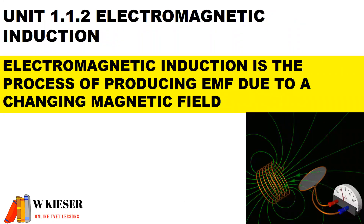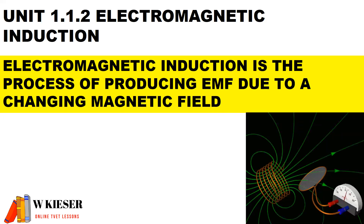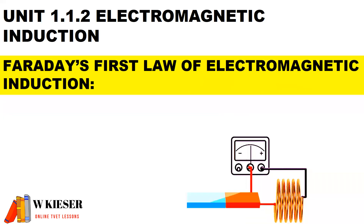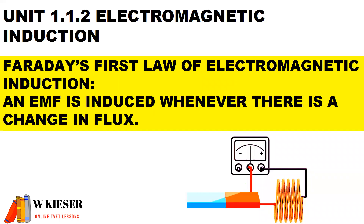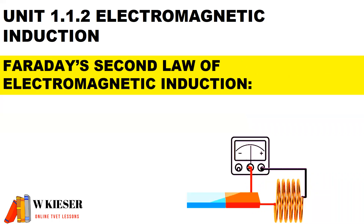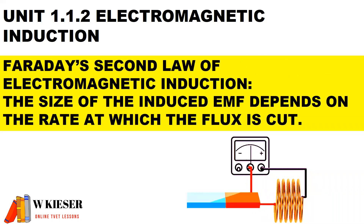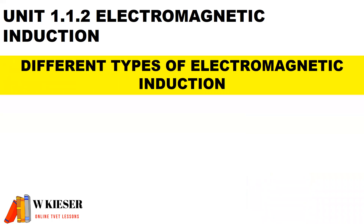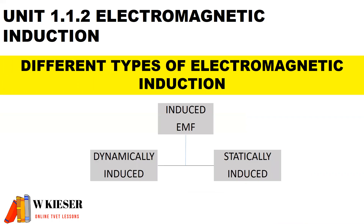Electromagnetic induction is the process of producing EMF due to a changing magnetic field. Faraday's first law states that an EMF is induced whenever there is a change in flux. Faraday's second law states that the size of the induced EMF depends on the rate at which the flux is cut. There are different types of electromagnetic induction — in this module we'll look at dynamically induced and statically induced.